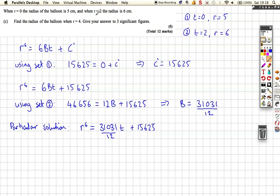So now that allows us to find out what r is when t is 4. So 4 seconds after the start if it's been inflated. Well, we substitute it into our expression here, and then find the 6th root of it. So we put 31031 over 12 times by 4 plus 15,625, and then find the 6th root of that. And r is equal to 6.53217872. r is equal to 6.53 centimeters to 3 significant figures, just using my calculator for that, substituting t is 4.